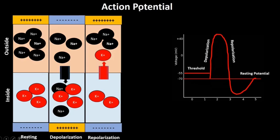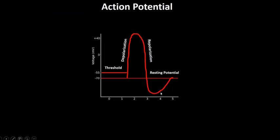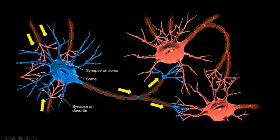Through this action potential, neurons send messages. The action potential is a temporary shift from negative to positive in the neuron's membrane potential. This spread of depolarization followed by hyperpolarization actually begins at the point where the soma of a neuron meets the axon and propagates like a wave all the way to its terminal buttons.